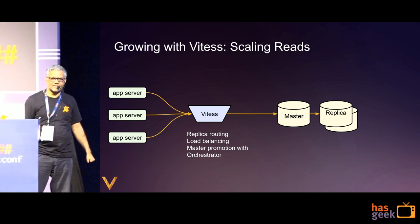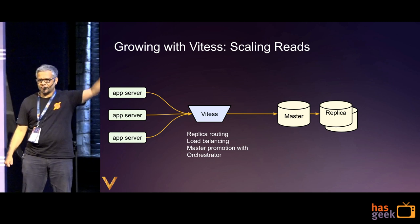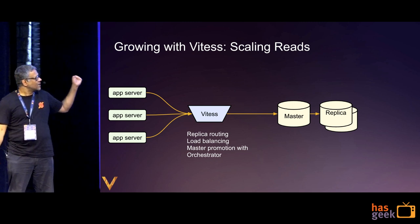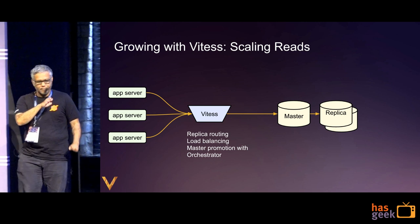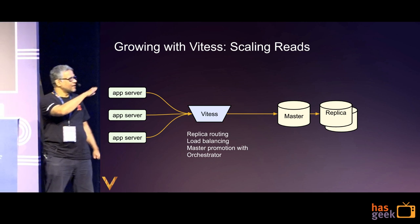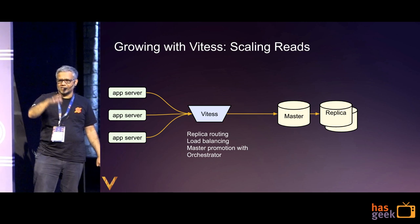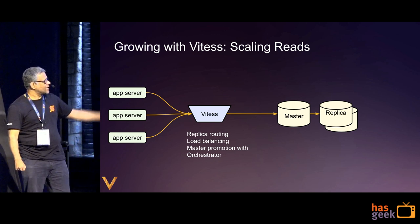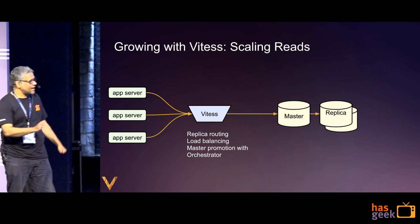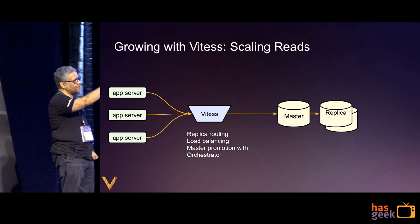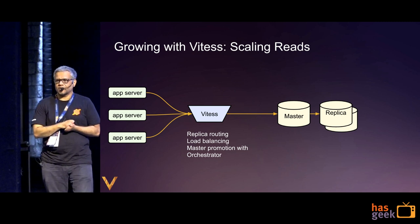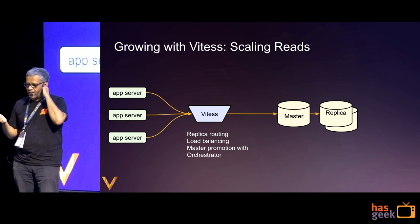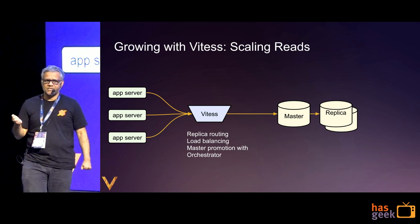The next step is to scale reads. You start a bunch of replicas, and if you now address them as main DB@replica, Vitess does the job of load balancing your eventually consistent reads across your replicas — giving you replica routing and load balancing, plus master promotion from replica to master. Vitess thinks about master promotion in two ways: planned reparent and unplanned reparent.